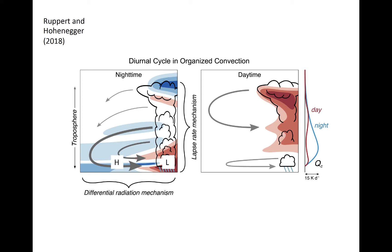The other growth mechanism occurs as a result of a local pressure gradient that develops at low levels between clouds and the clear air environment. While the bases of clouds warm due to absorption of longwave radiation, the clear air environment cools by emitting longwave radiation to space. The cooler region induces a local high pressure on the mesoscale, and the resulting pressure gradient drives low-level flow from the environment toward the convection, inducing low-level convergence, which promotes updraft growth.